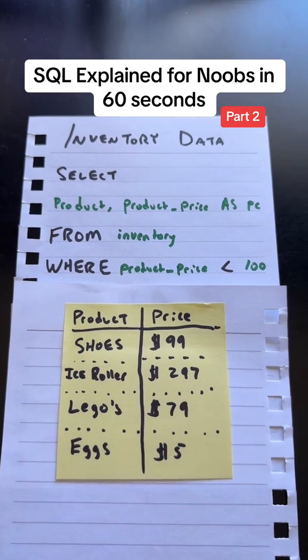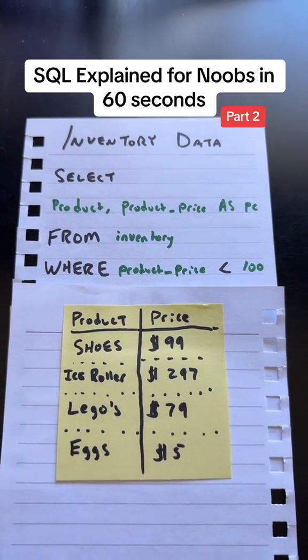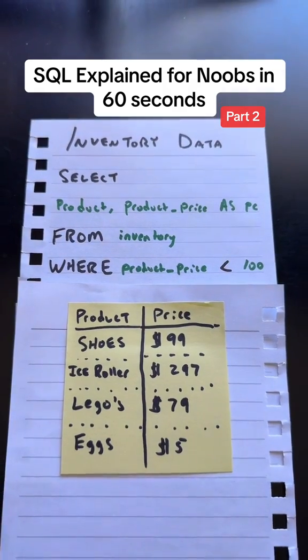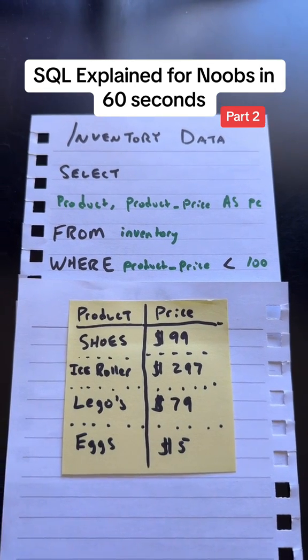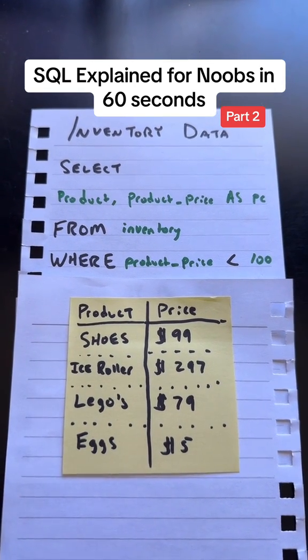Now, I'm only interested in products that cost less than $100, so I added this where clause right here that lets us say where the product price is less than $100. That's all we want, so we will only have shoes, Legos, and eggs in our return.